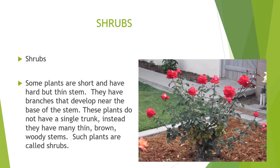Shrubs. Some plants are short and have hard but thin stem. They have branches that develop near the base of the stem. These plants do not have a single trunk. Instead, they have many thin brown woody stems. Such plants are called shrubs. These plants need small space for spreading their branches. When much branched and dense, it may be called a bush. Shrubs live for a shorter time. Examples of shrubs are rose, hibiscus, lemon, etc.